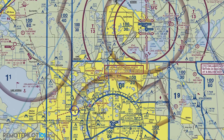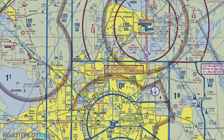Dashed magenta line is surface Class Echo airspace — in this case it is a surface Class Echo extension. And last, faded magenta line is a Class Echo transition area. Inside of it, Class Echo airspace starts at 700 feet. Outside of it, it starts at 1,200 feet. This area here starts at 2,000. So the Echo out here starts at 1,200 feet — 700 in, 1,200 out — unless otherwise depicted by other airspace.